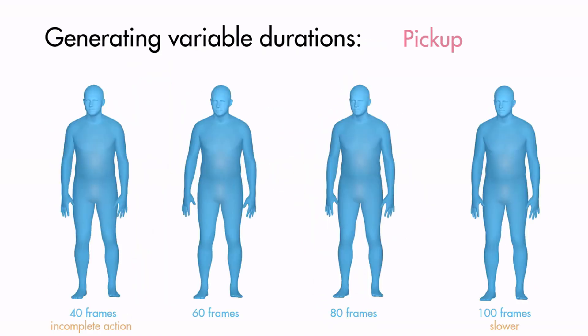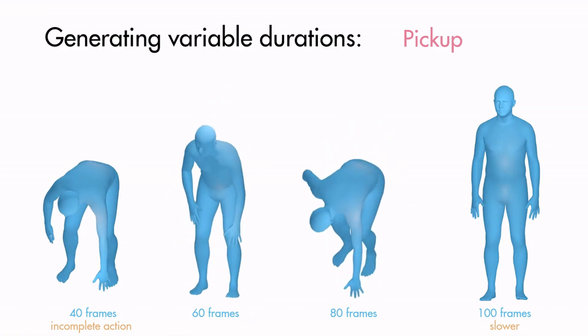Our model is trained with variable durations by sampling sequences between 60 and 100 frames. Therefore, we are able to generate sequences of different durations at test time. Here, we visualize various generations from the same random noise vector conditioned on the action pick-up. While very short generations, such as 40 frames, may represent incomplete actions, long generations are slower to complete the action.